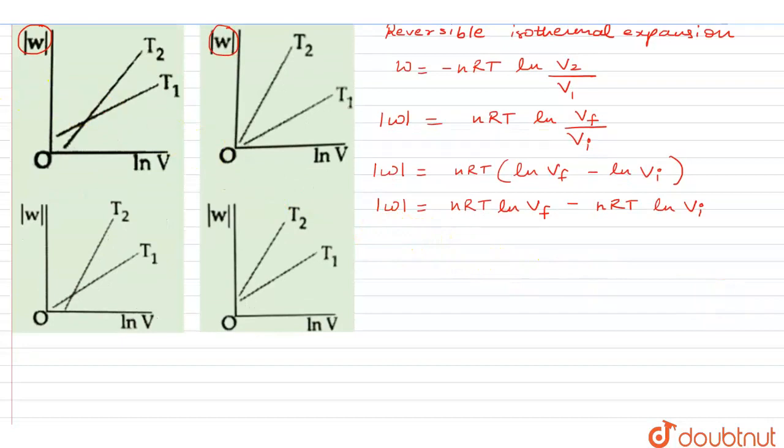So accordingly, if we go to compare it with the straight line equation, it is going to show us that on the y-axis we have W, on the x-axis we have final volume.